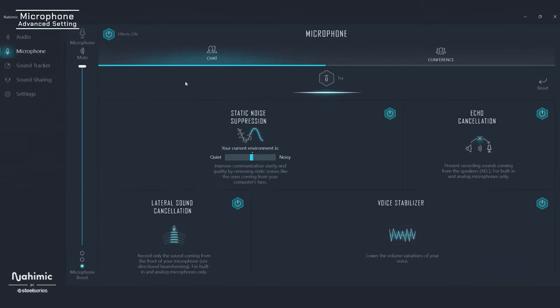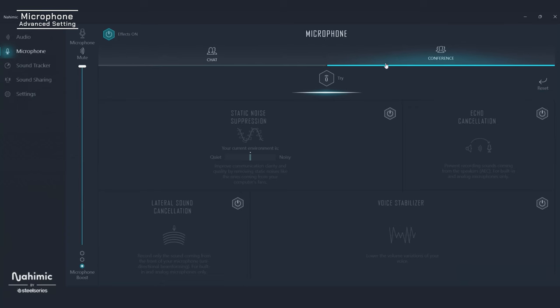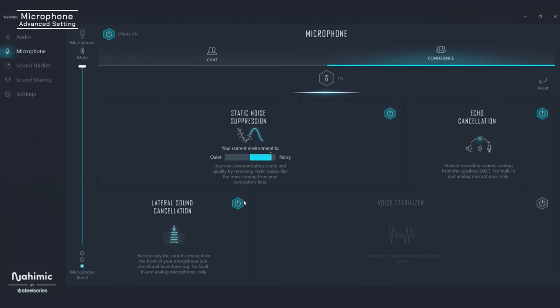Next, let's look on the left to explore the microphone settings. Like your audio, there are multiple profiles here too — chat and conference. Within each of those, there are a variety of options to improve the quality and clarity of your own microphone and the microphone of who you're talking with. The first one is static noise suppression. If your computer fan was raging, this feature would really clean up your microphone input. Nahemic has really thought of everything. Echo cancellation does exactly what it sounds like. Lateral sound cancellation only records sound immediately in front of your microphone, so your teammates don't catch any unwanted background noises off to the side. And lastly, Voice Stabilizer works the same as it does in audio settings to reduce any significant volume fluctuations.